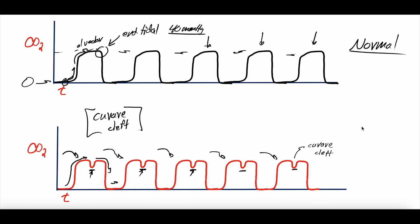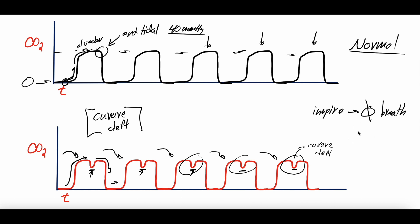This can happen because the ventilator is set such that the patient is not strong enough to overcome the trigger threshold — not able to mobilize enough inspiratory pressure to initiate a breath. It might also be because there's auto-PEEP or breath stacking, or because the patient is not fully paralyzed. These things need to be considered and the ventilator settings may need to be adjusted and lowered to allow the ventilator to sense the patient's inspiratory effort.